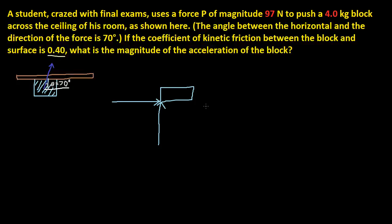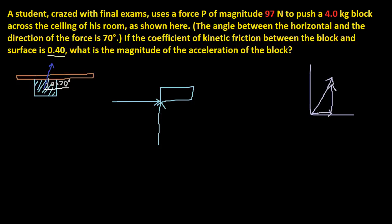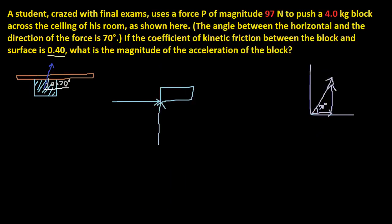We can figure it out using the Pythagorean theorem. If we have a vector going this way, then we have a vector going this way and a vector going this way. This vector right here is going to be this one, and this vector right here is going to be this one. This part right here is 70 degrees.